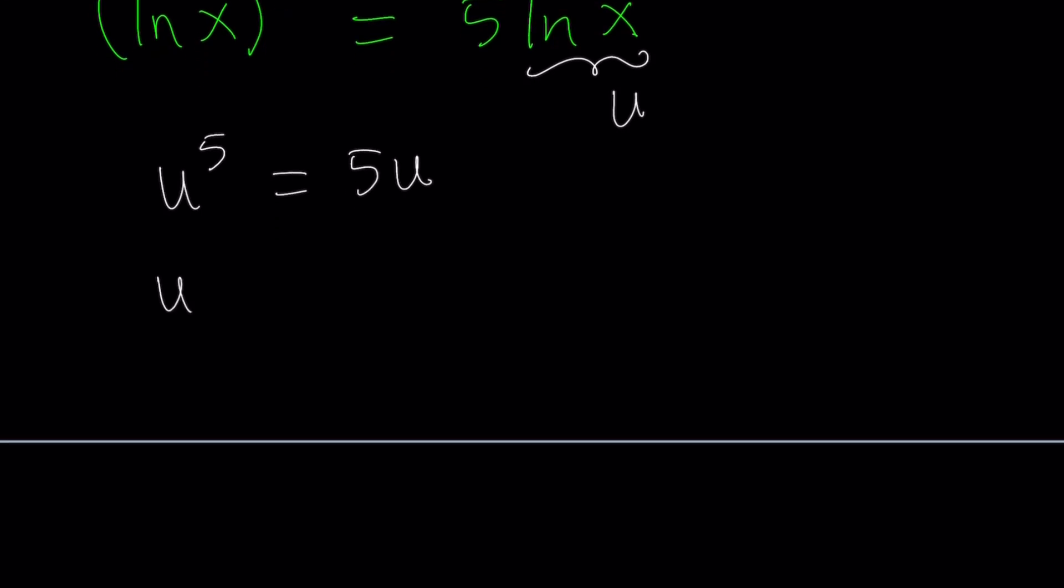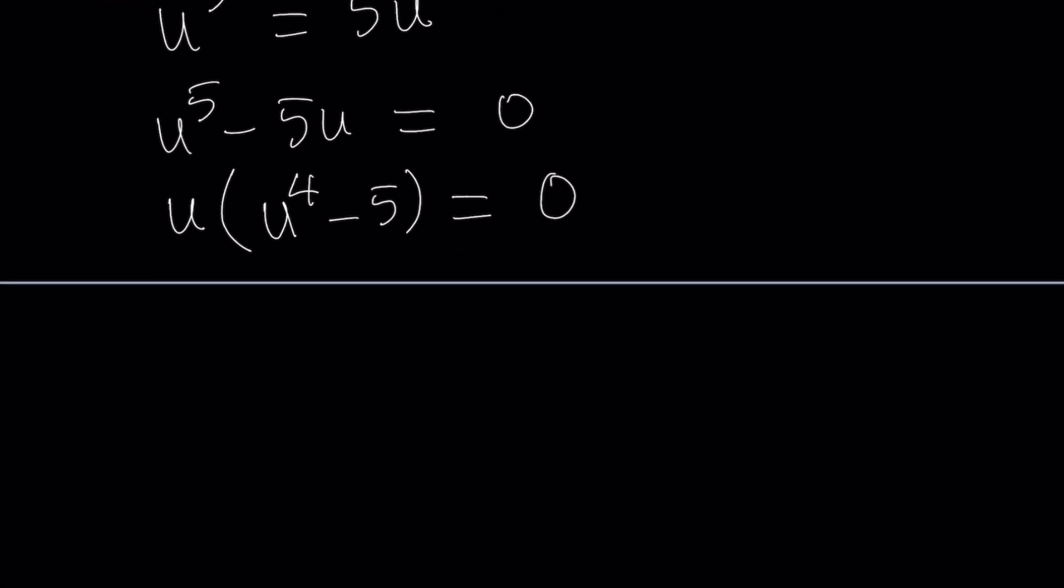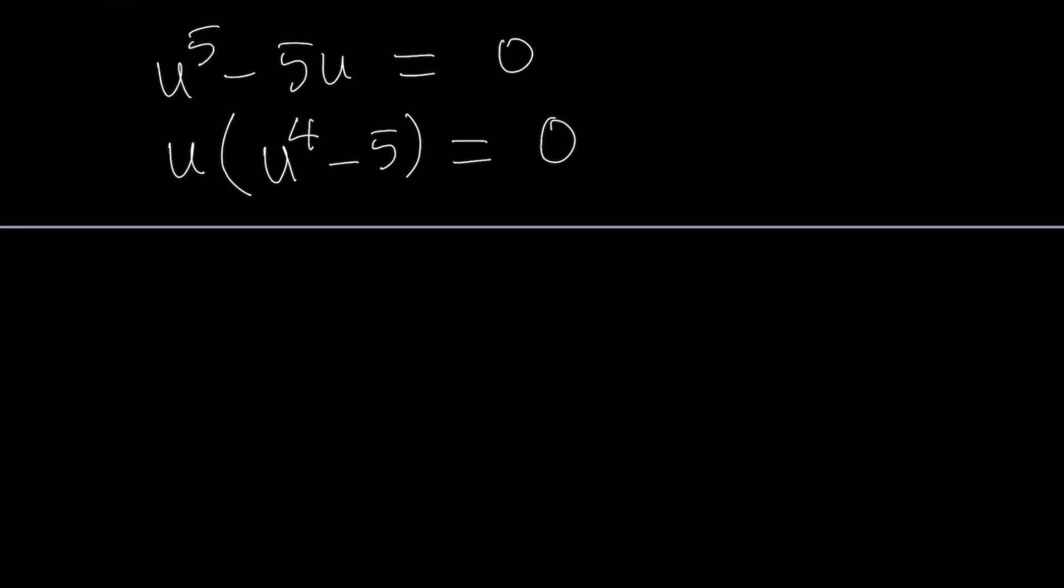Let's subtract 5u from both sides and then factor out u. u to the fourth power minus 5 equals 0. So the first factor gives us u equals 0, obviously, u equals 0.